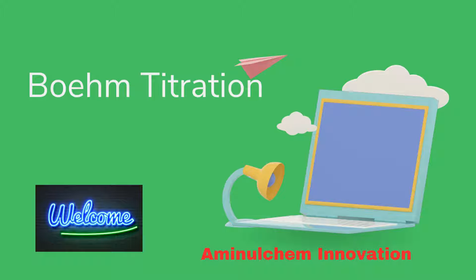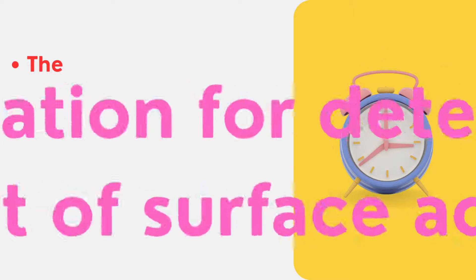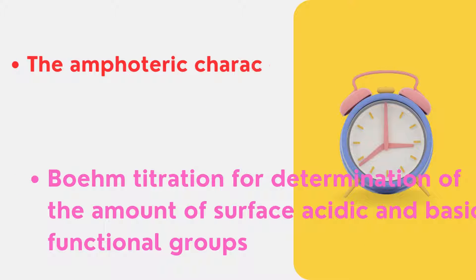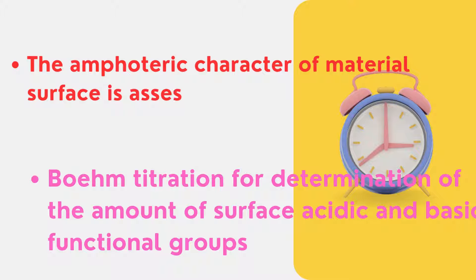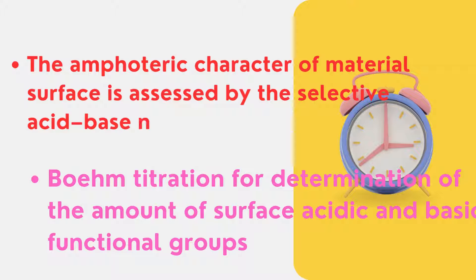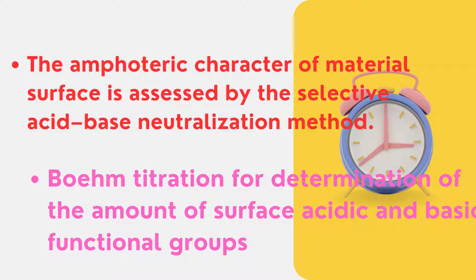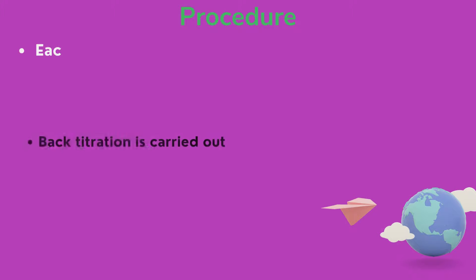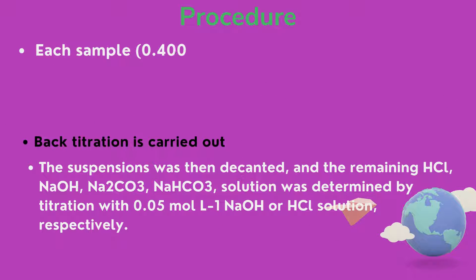This video is very important so please do not skip. The amphoteric character of material surfaces is assessed by the selective acid-base neutralization method, and Boehm titration is used for this purpose. Now let us proceed with the procedure.